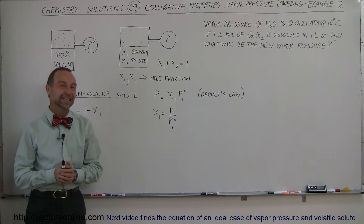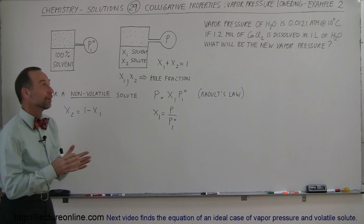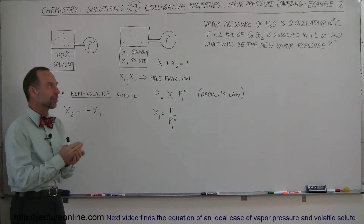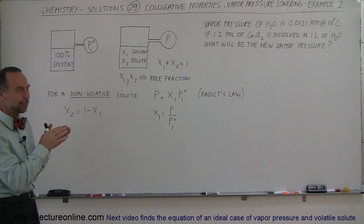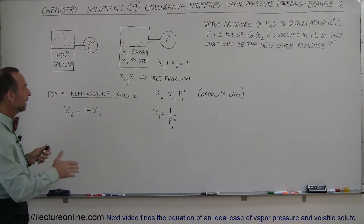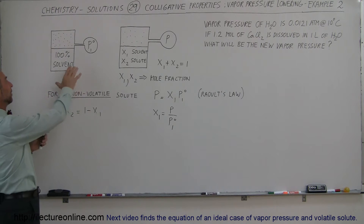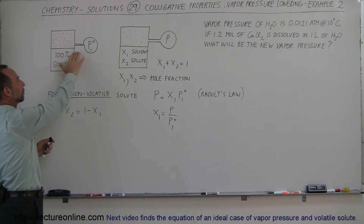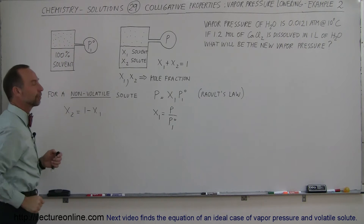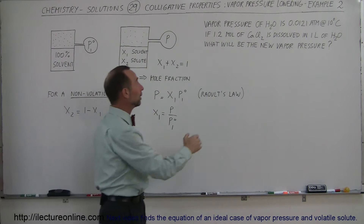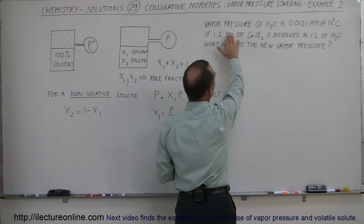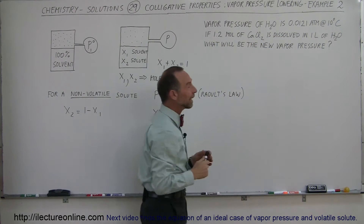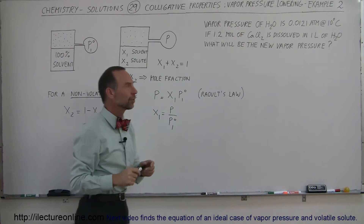Welcome to ElectronLine. Here's another example of how adding a solute to a solvent can actually lower the vapor pressure of the solution. Starting out with 100% solvent, at a particular temperature we'll have a particular vapor pressure. In the case of water, the vapor pressure of water is 0.0121 atm at 10 degrees centigrade.